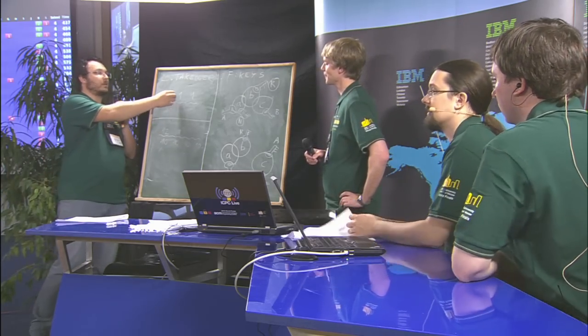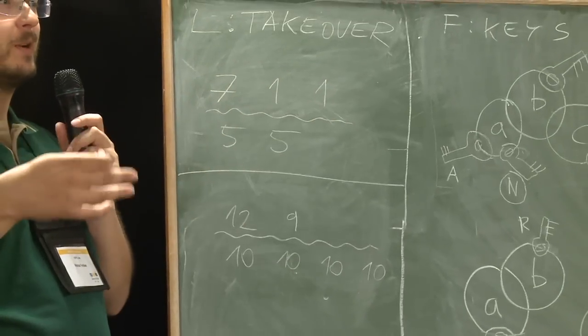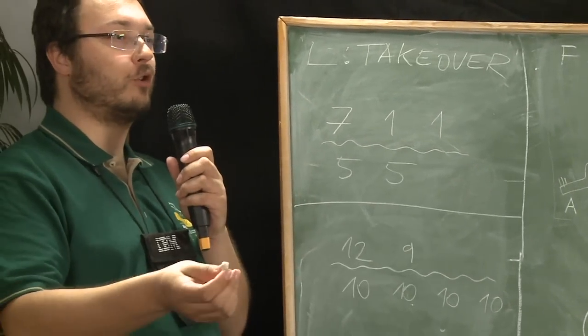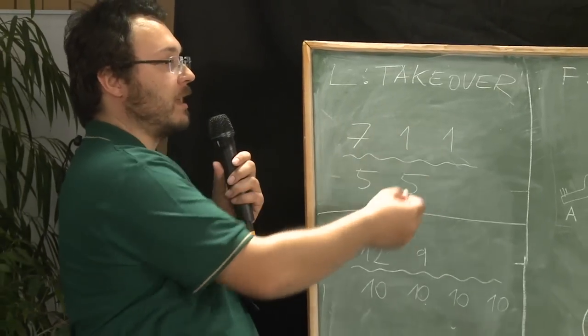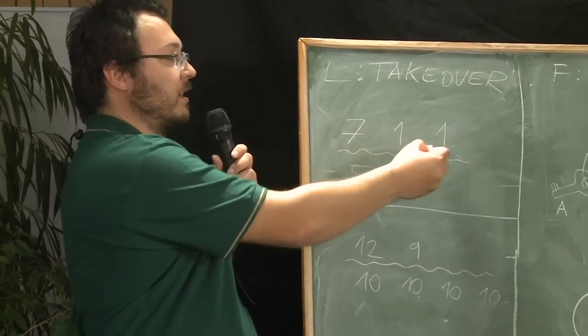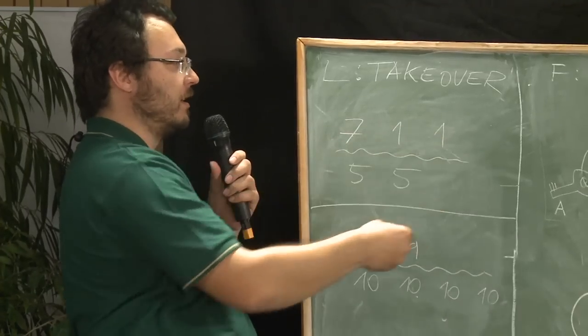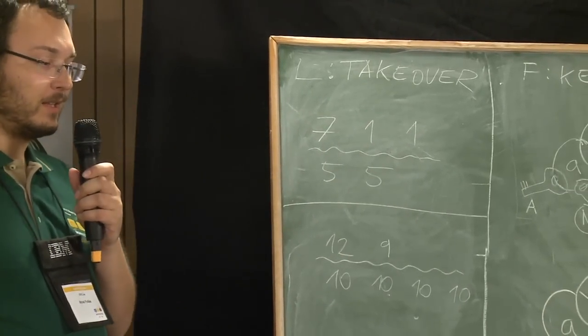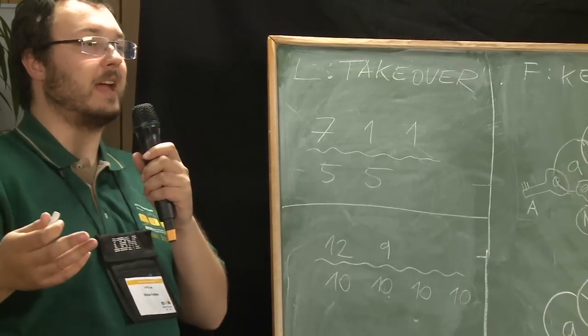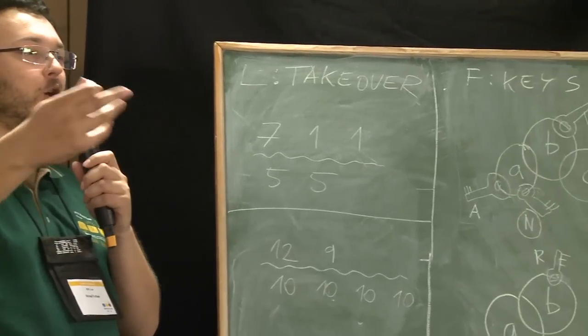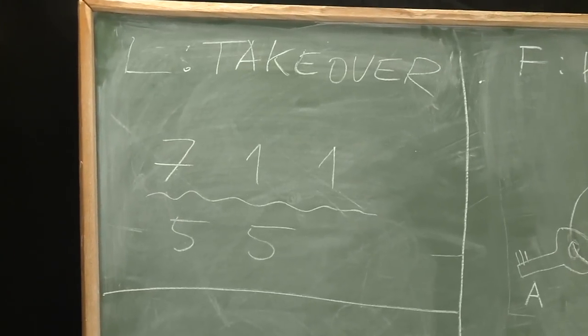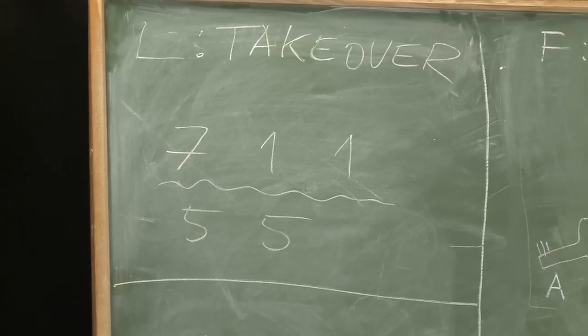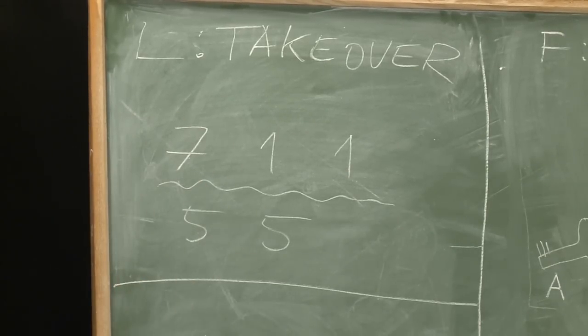So let me once again first explain the problem and then go to the solution. In this problem we have some companies and each company is represented by an integer, which is like its size. And the companies are owned by two corporations. For instance, this is the example case. So one corporation owns three companies of sizes seven, one and one. The other corporation owns two companies of sizes five and five. And the goal of both corporations is they are playing a game and each of them is trying to take over the other one. This has to be done by a company taking over another company. And so the corporations, when playing this game, take turns.